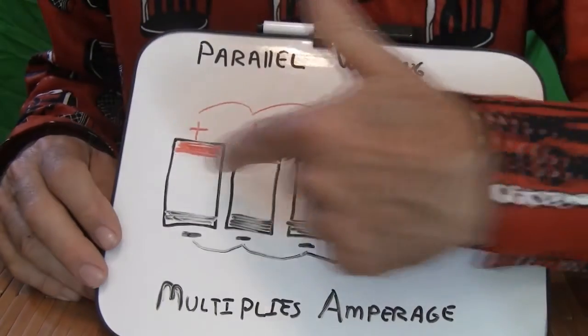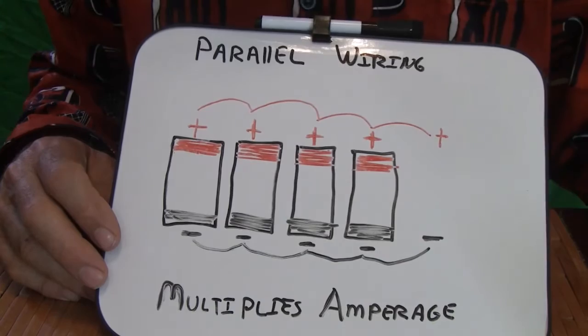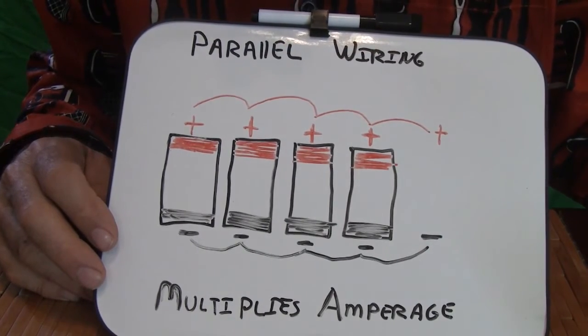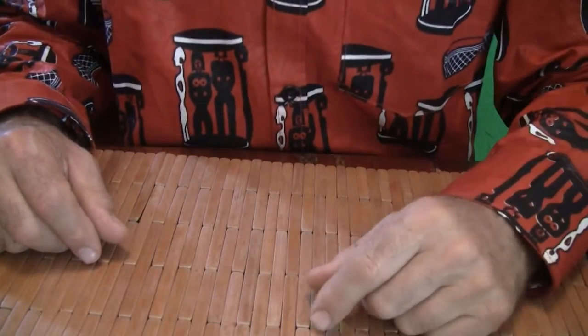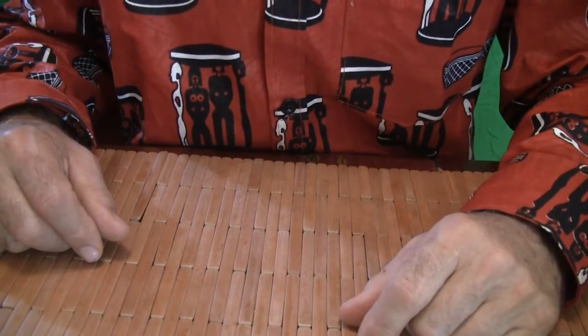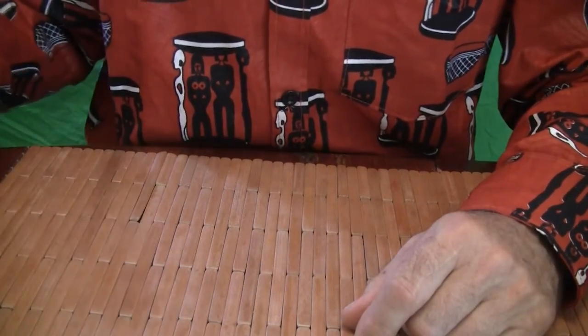So if each of these was 3 amp hours, 4 times 3 is 12, you would have a 12 amp hour battery. So to wire things in parallel, we need to connect the negative ends with the negative ends, and the positive ends with the positive ends.